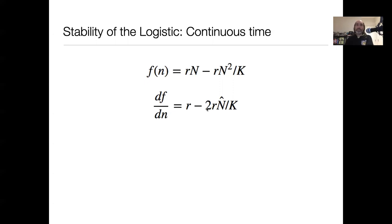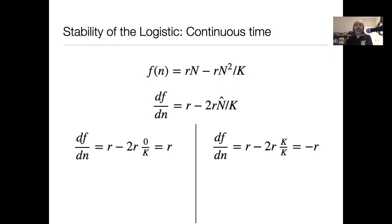Taking the derivative gives us r minus 2rn/K. That's because the derivative of rn with respect to n is just r, and r/K is a constant, so the derivative of rn²/K gives 2rn/K. Next, we plug in our two equilibrium options. When n-hat equals zero, the second term goes away and we get df/dn equals r. When n-hat equals K, K/K equals 1, so we get r minus 2r, which equals negative r.